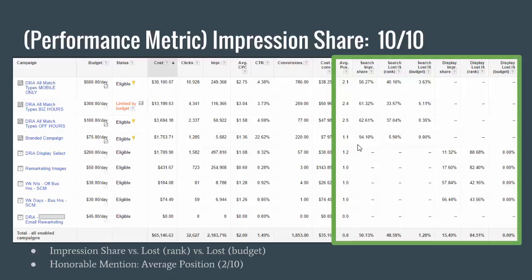I also have Average Position included here. Average Position is similar to Impression Share but not nearly as important by itself. For example, an ad that always shows in position 3 at 100% of the time would have 100% Search Impression Share but an average position of 3. You could still bid higher to improve average position without necessarily increasing Impression Share. They're generally correlated, but Average Position is just that additional variable to help understand where your ads are showing.